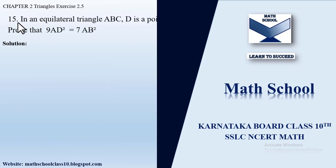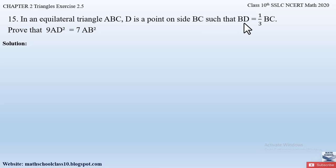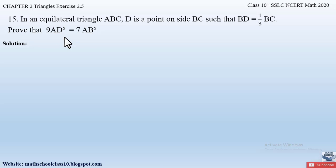Question number 15 from exercise 2.5, chapter 2 Triangles says: in an equilateral triangle ABC, D is a point on side BC such that BD is equal to one third of BC. Prove that 9 AD square is equal to 7 AB square. This question is very important, so please try to understand and practice this problem.